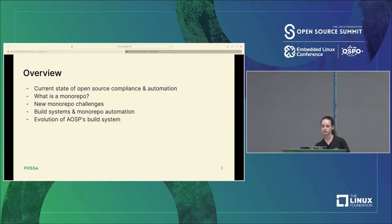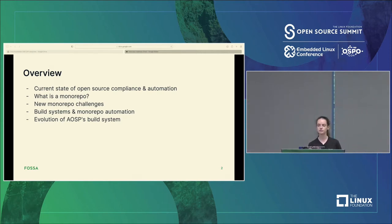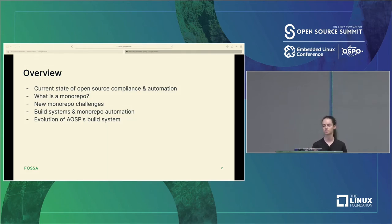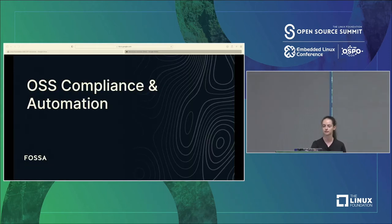To start with an overview of what we'll actually cover: first I'll look at the current state of open source compliance and automation. Then what exactly is a monorepo and why we care about them. Then the challenges that monorepos present. Then a slight detour into build systems and how they interact with monorepos and monorepo automation, and then wrap up with the evolution of AOSP's build system through time.